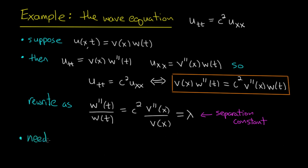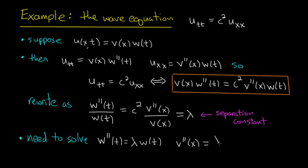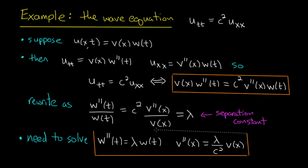We need to solve the following equations. The first is W'' = lambda·W, and the second is V'' = (lambda / c²)·V. Remember, c is never zero, so it's perfectly fine to divide by it. I'll box off these equations — these are the equations we solve in order to reassemble solutions to the wave equation.